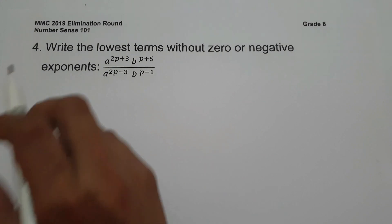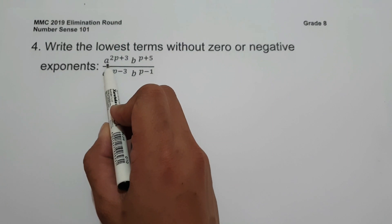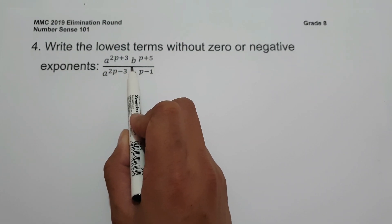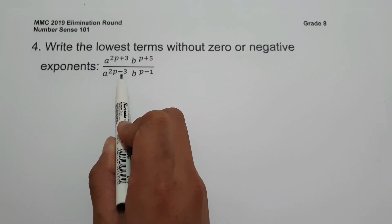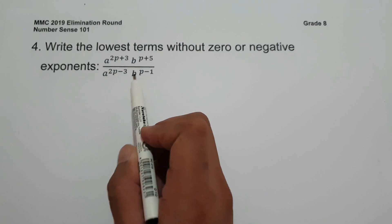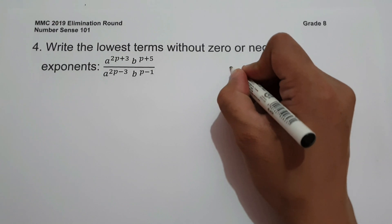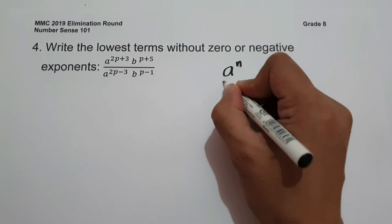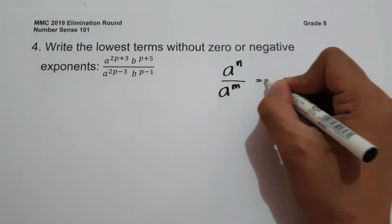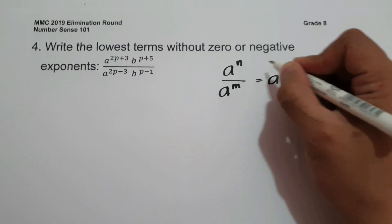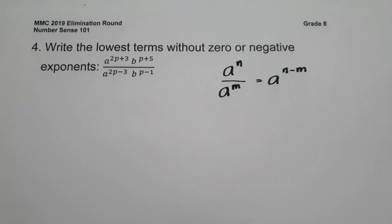For number 4, write in lowest terms without zero or negative exponents: a raised to (2p+3) times b raised to (2p+5), all over a raised to (2p-3) times b raised to (p-1). To simplify, we use the property a raised to n over a raised to m equals a raised to (n minus m).